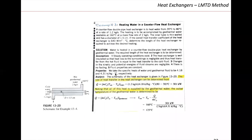We then perform the energy balance on the cold stream water, because we know the mass flow rate, we can get the Cp from tables, and we know the two temperatures: 20 and 80. If we calculate the heat transfer rate for this heat exchanger from the cold stream water, we get 301 kilowatts.